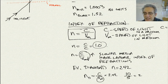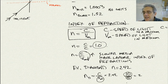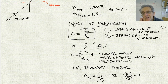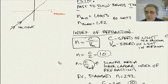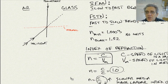Since the index of refraction of diamond is more than 2, that means the speed of light in a diamond is even slower than half the speed of light in a vacuum. That's what the index of refraction represents.